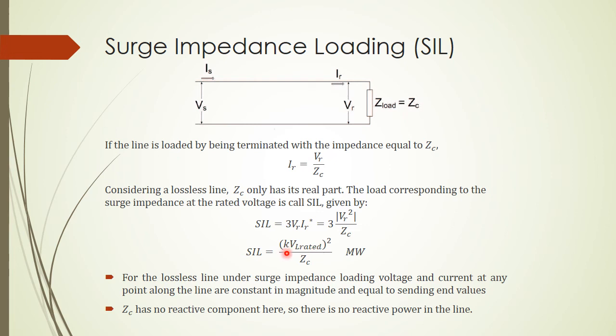For the lossless line under surge impedance loading, voltage and current at any point along the lines are constant in magnitude and equal to the sending end values. We have a very interesting case that the voltage has the magnitude constant. The characteristic impedance has no reactive components, and there is no reactive power in the line. The power factor of the line is unity.